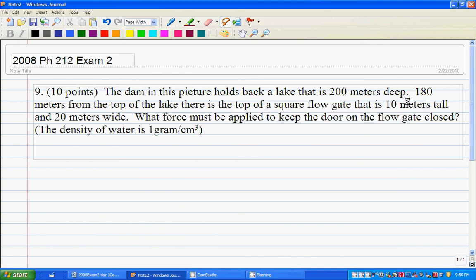The dam is holding back a lake that is 200 meters deep. It's 180 meters from the top of the lake to the top of a square flow gate near the bottom of the dam. And this flow gate is 10 meters tall and 20 meters wide.